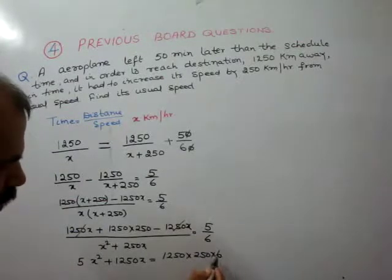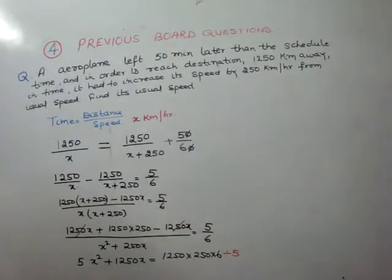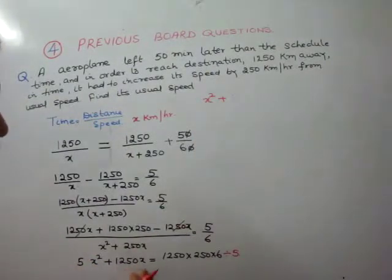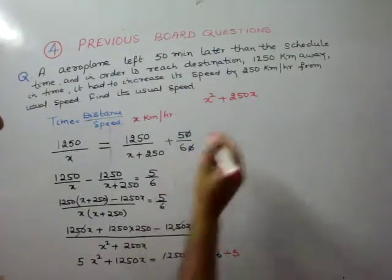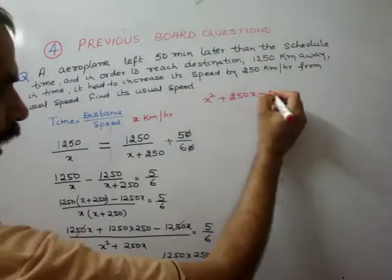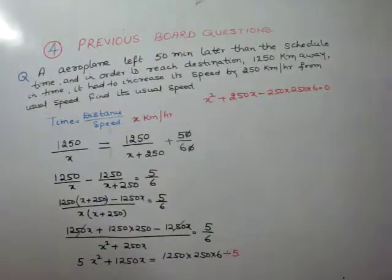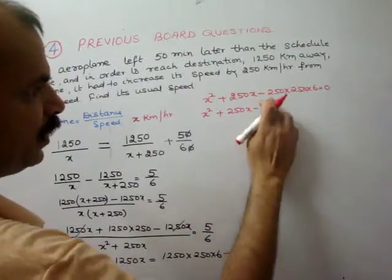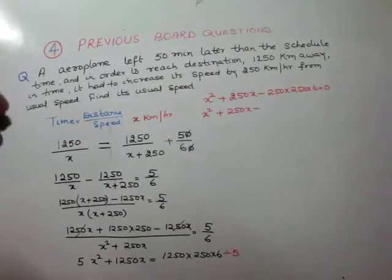The 1250x terms cancel. Then cross-multiplying with 6: 5x² + 1250x = 1250 × 250 × 6. Dividing everything by 5, our equation becomes: x² + 250x minus 250 × 250 × 6 ÷ 5 = 0, which simplifies to x² + 250x − 375000 = 0.